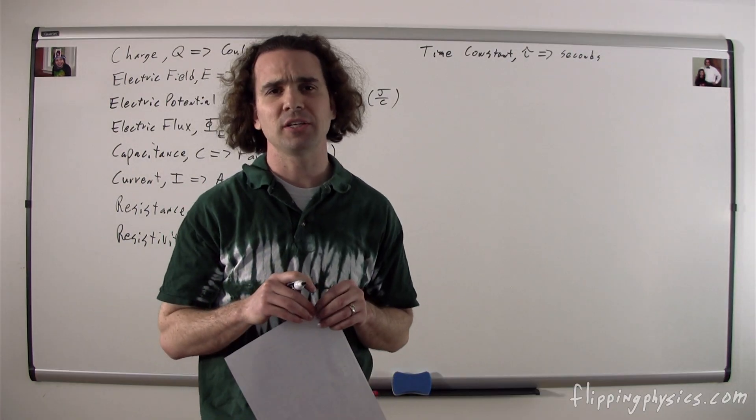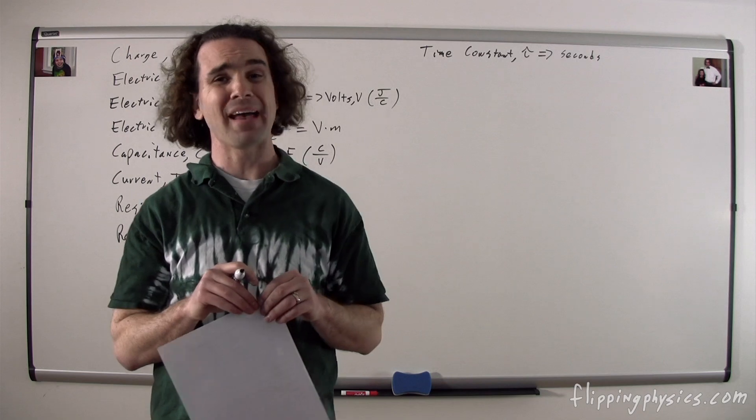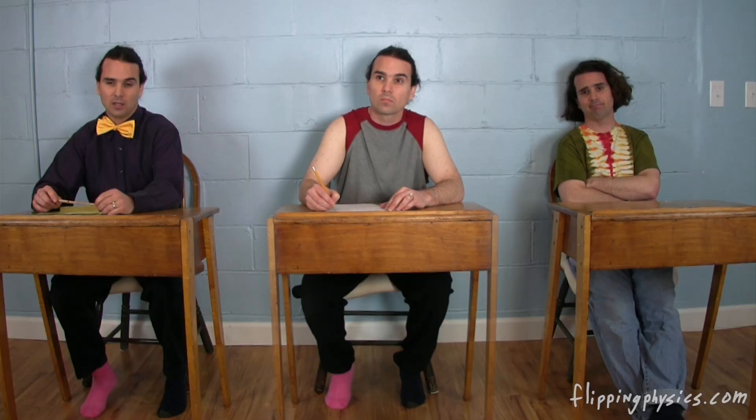Billy, what are the symbol and dimensions for magnetic field? The symbol for magnetic field is a B, and its dimensions are Teslas.